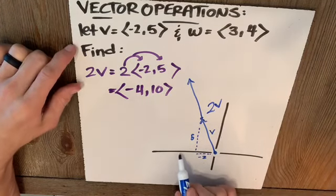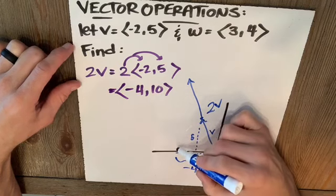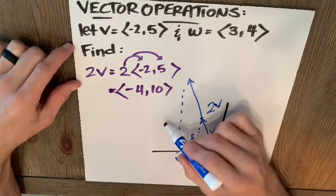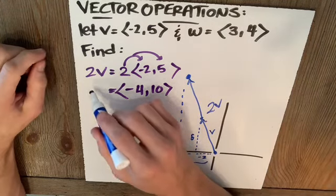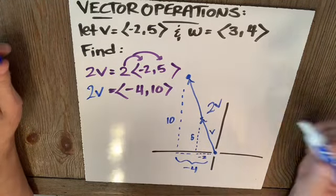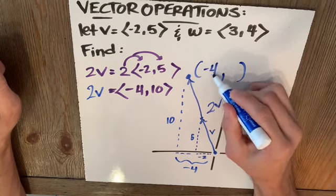And now we're saying go over a distance of negative 4 and up a distance of 10 to get to this point. I love standard position because if the vector 2V is negative 4, 10, then I'm going to end up at the point negative 4, 10.